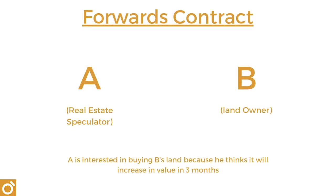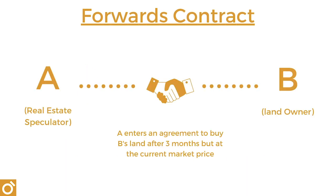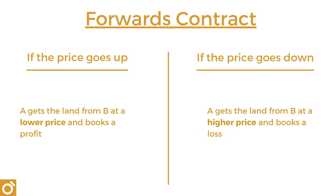For example, let's say that Mr. A is interested in real estate and thinks that a plot of land owned by Mr. B will increase in value in three months' time. So A enters into a contract with B to buy the land in three months at the current market price. B is happy to make the deal since he doesn't believe in a future price increase. If the price of the land actually does go up in three months, A can buy it at the initially agreed upon price and pocket a nice profit.